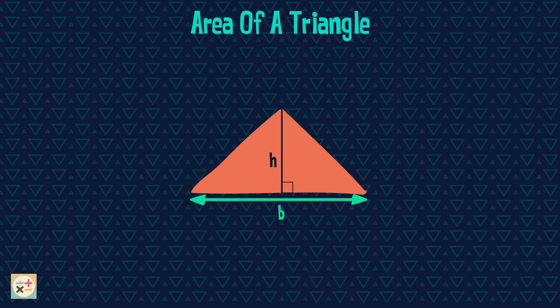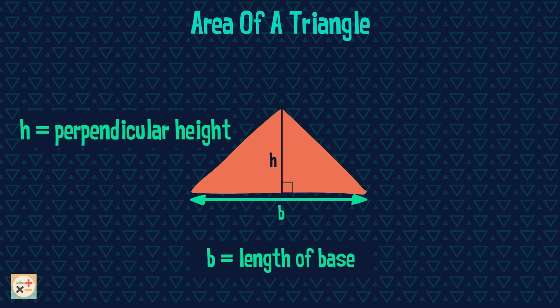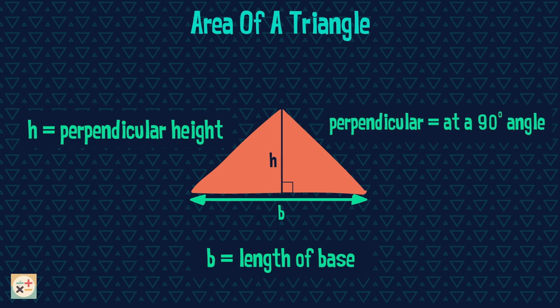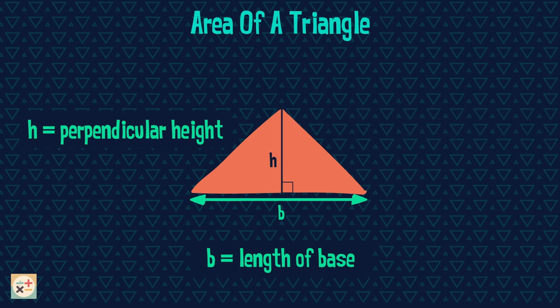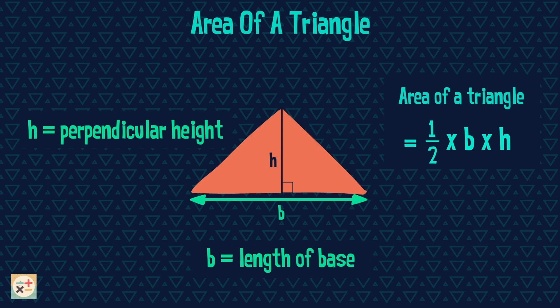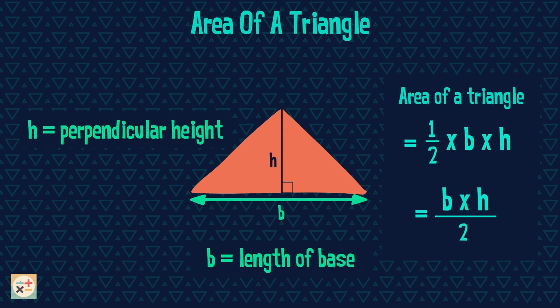Let's have a look at this triangle. B represents the length of the base and H represents the height. Notice that the height is not a length of one of the sides here — it is the perpendicular height, in other words, the vertical height of the triangle. This means the height is measured from the base at a right angle. When we know these measurements, we can use this formula for working out the area of the triangle. We multiply the base with the height and then halve it. You can also write the formula as half times base times height. Both of these are the same, as we are halving the base times the height.